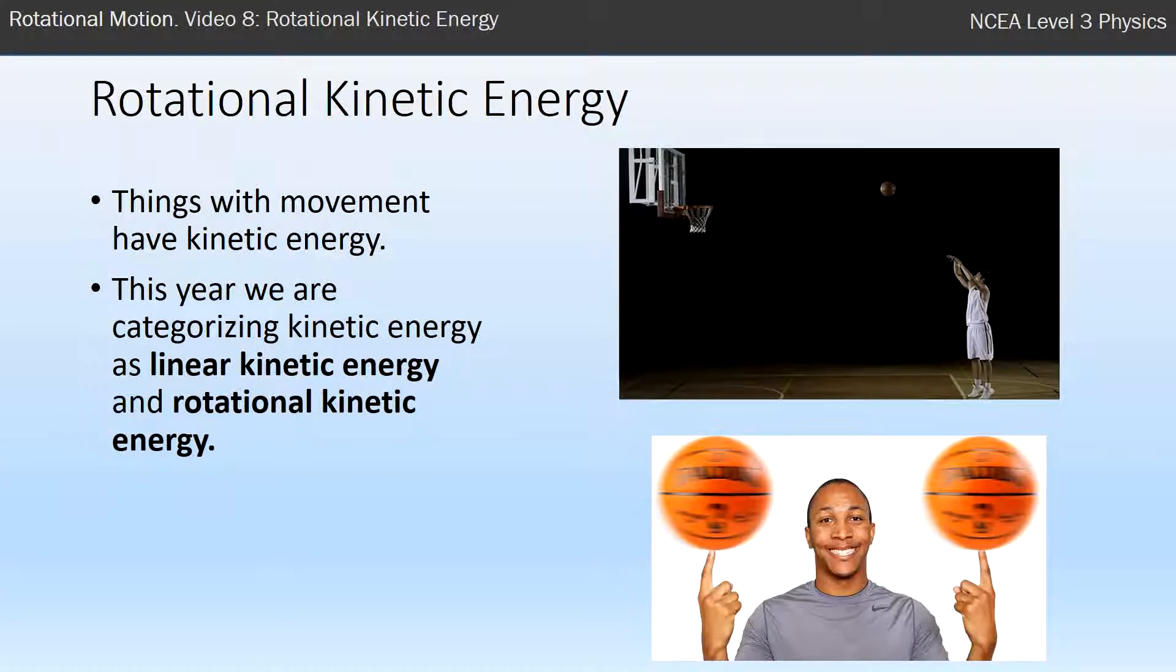That also has kinetic energy because the object is moving. It's not moving from place to place, it's moving within the same place, but it still is moving. So we need to separate these two ideas out into separate types of kinetic energy. This year we talk about linear kinetic energy, which is the type of kinetic energy that you're used to, half mv squared. And we're going to have spinning objects as having rotational kinetic energy.